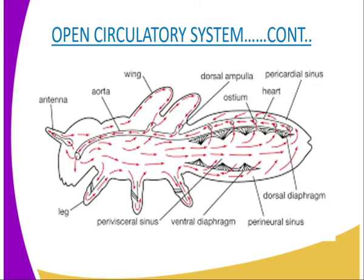In a typical insect, such as a cockroach, there is a tubular heart just above the alimentary canal, which you can notice on our diagram. The heart has 13 chambers. It also comprises 3 in the thorax and 10 in the abdominal segments. The abdominal segments are confined to the abdomen.